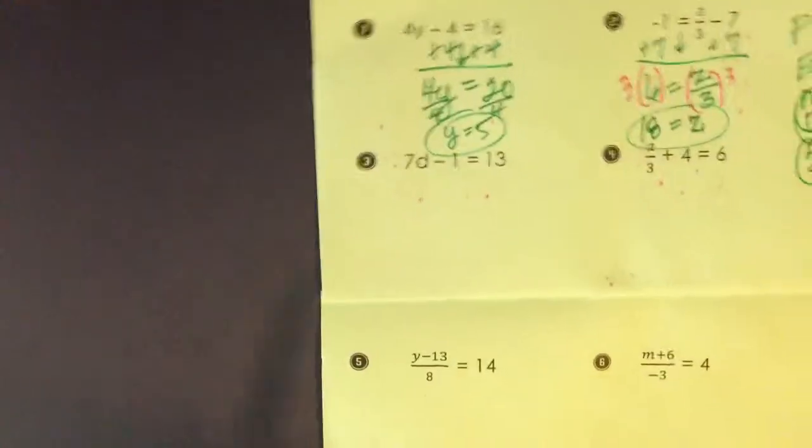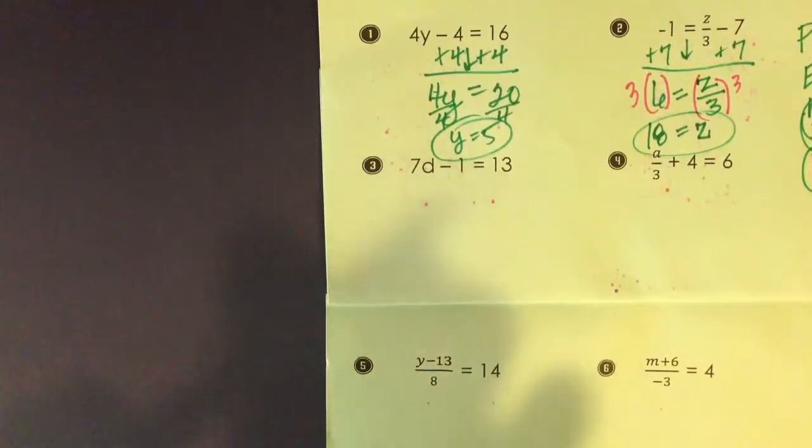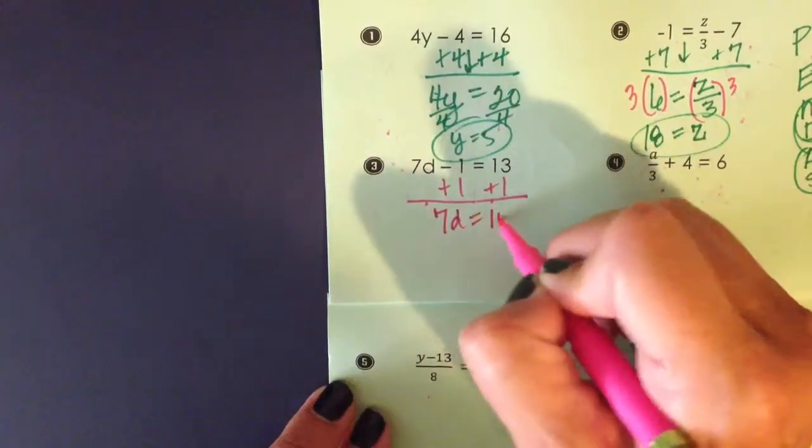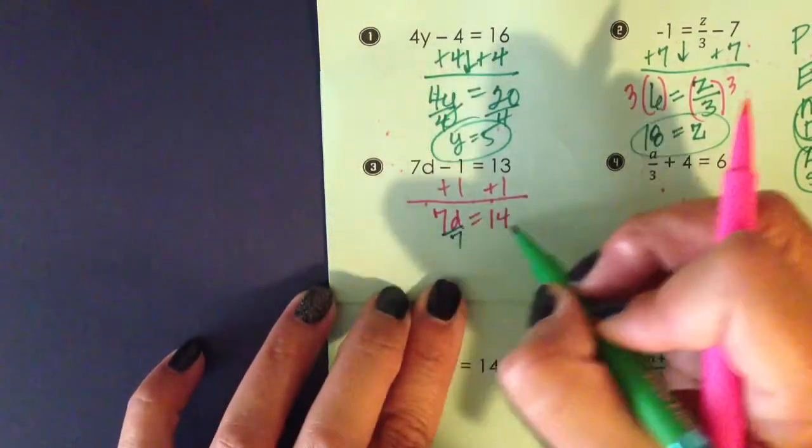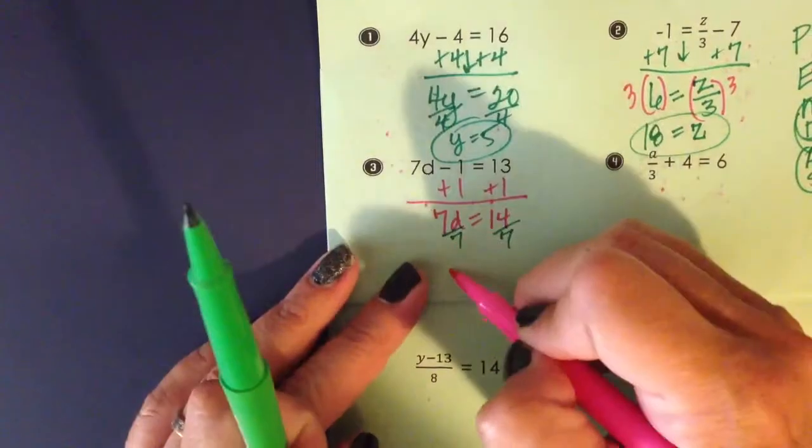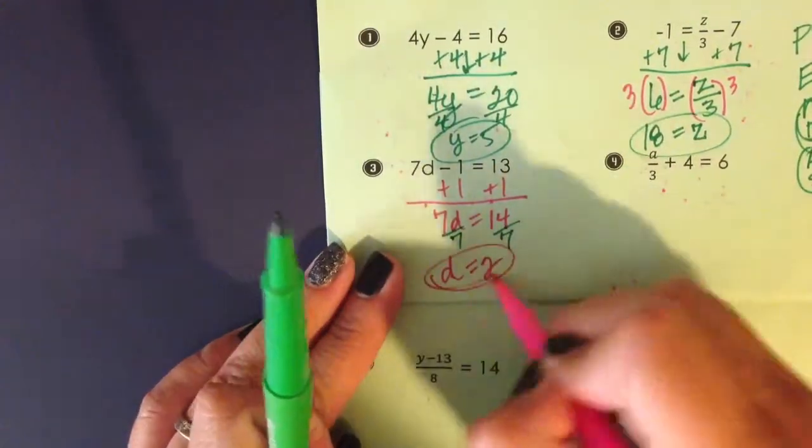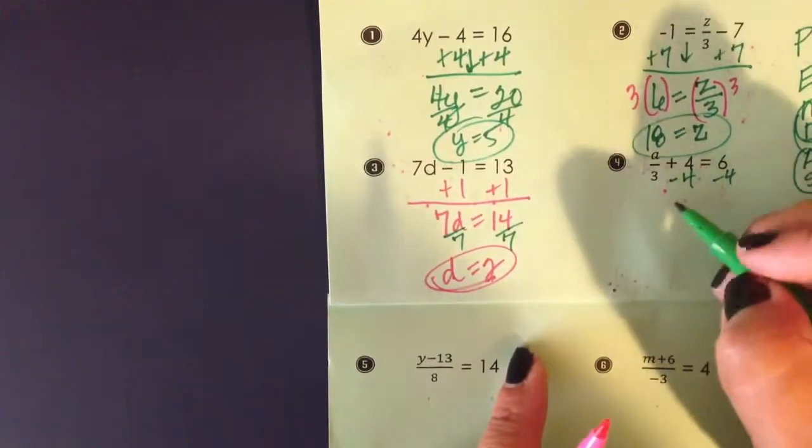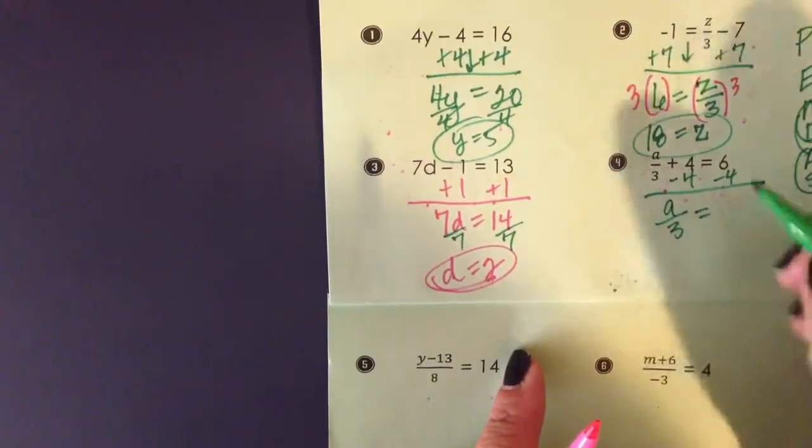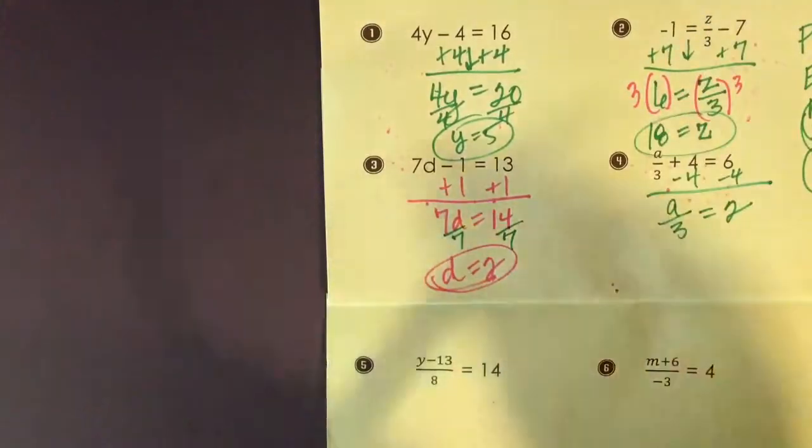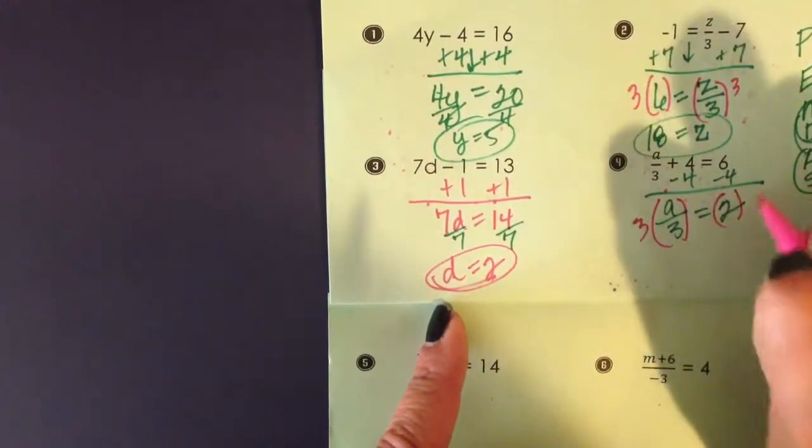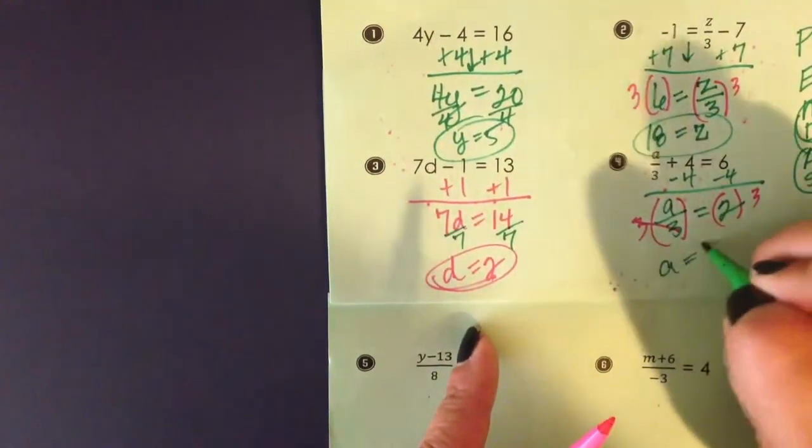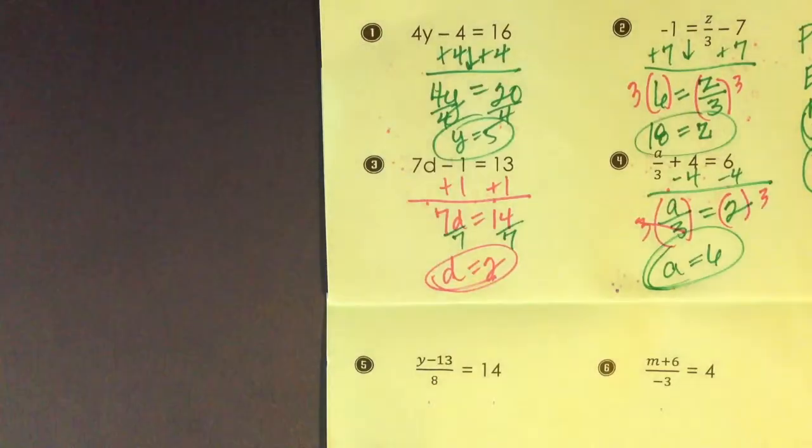In number 7, I'll add 1 to both sides first. Wind up with 7d equals 14. I'm going to move forward and divide both sides by 7, and have d equals 2 as an answer. In number 4, I'm going to subtract 4 from both sides. A over 3 equals 2. I'm going to undo divide by 3 by multiplying both sides by 3, so A is going to equal 6. You can stop the video and practice the next 4.